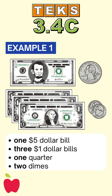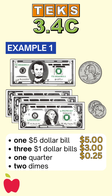A $5 bill is worth $5. Three $1 bills are worth $3. One quarter is worth $0.25. And two dimes are worth $0.20. Now, let's add it all together: $5 plus $3 plus $0.25 plus $0.20 equals $8.45.